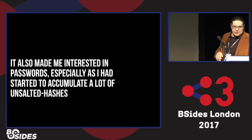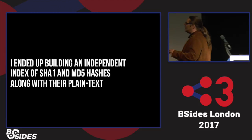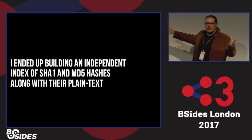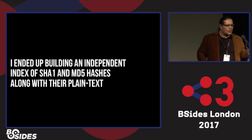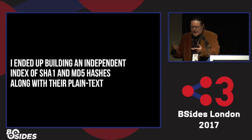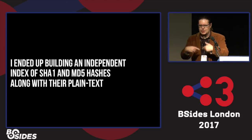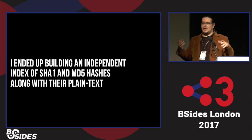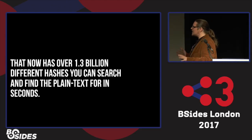So we built an independent index of SHA-1s and MD5 hashes. Zoosk, another dating website, used MD5s. In the index, each record holds the SHA-1, the MD5, and the plain text. You could push a SHA-1 to the REST API and it would come back in about two seconds saying 'we know that password and it is this.' The index now has 1.3 billion different hashes you can search. If we've seen it before, we'll get it in seconds — think rainbow tables but elastic tables.